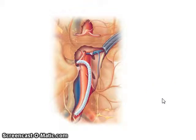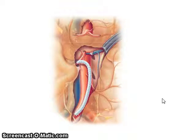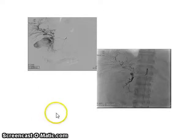Then there is chronic mesenteric ischemia, which occurs over a time span of months to years. If there is a stenosis in that mesenteric artery, it can be treated with angioplasty and a stent.